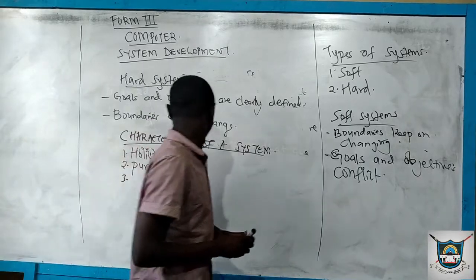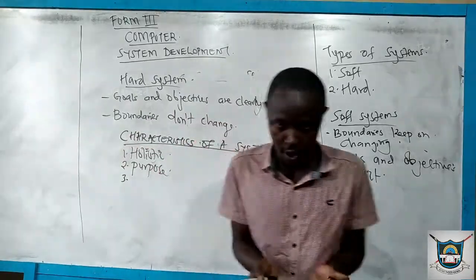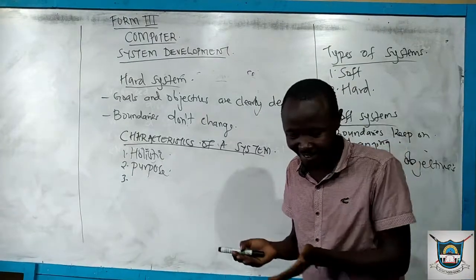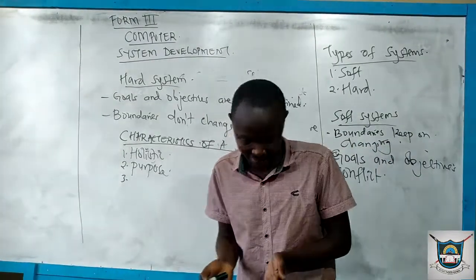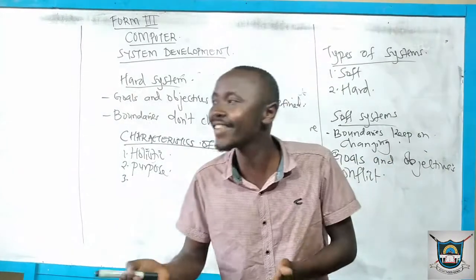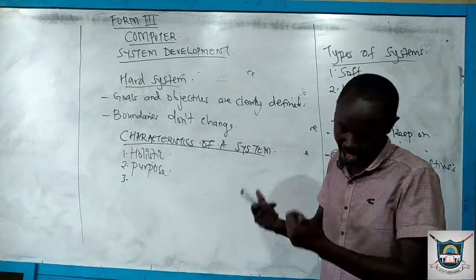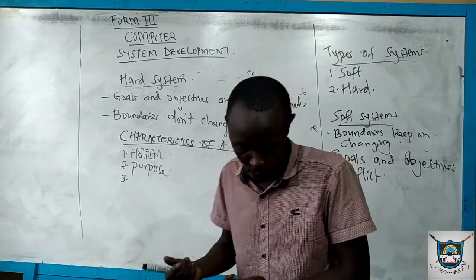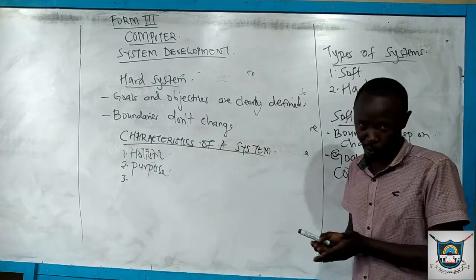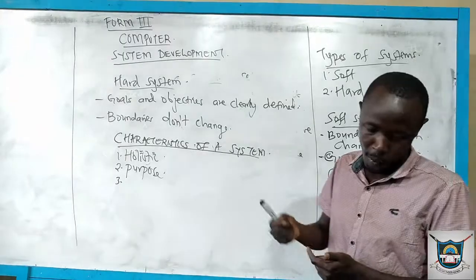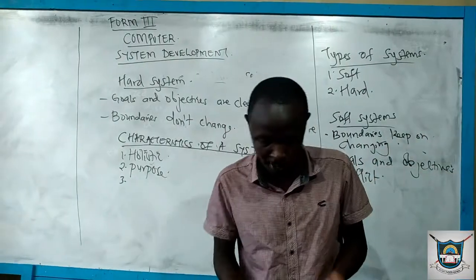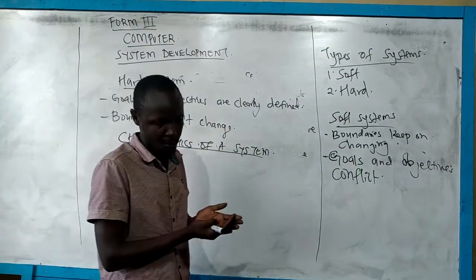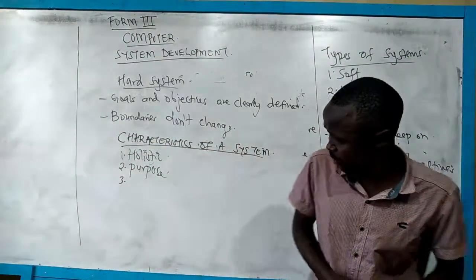One characteristic of a system is that it should be holistic. When we talk of holistic, we mean all the components should work as a whole. The system consists of interacting elements — let them give a common objective or goal. Let there be no component that is not helping in the system. There are many components, but when they come together, we take them as one.